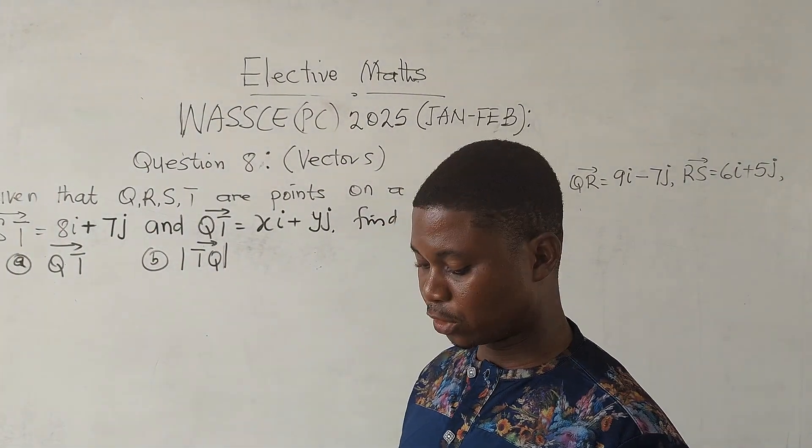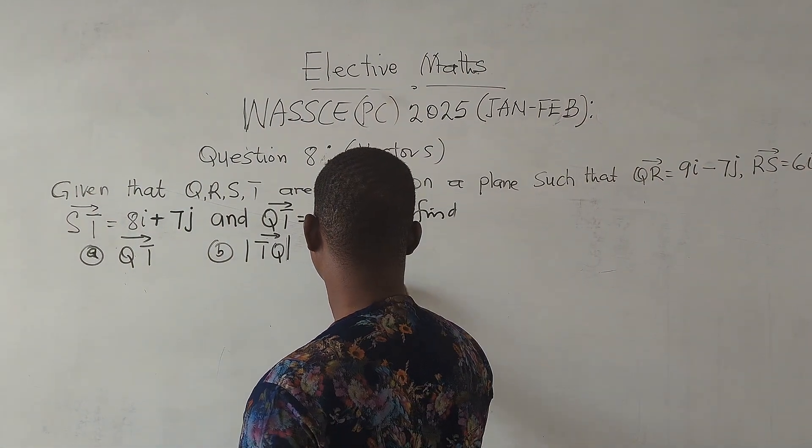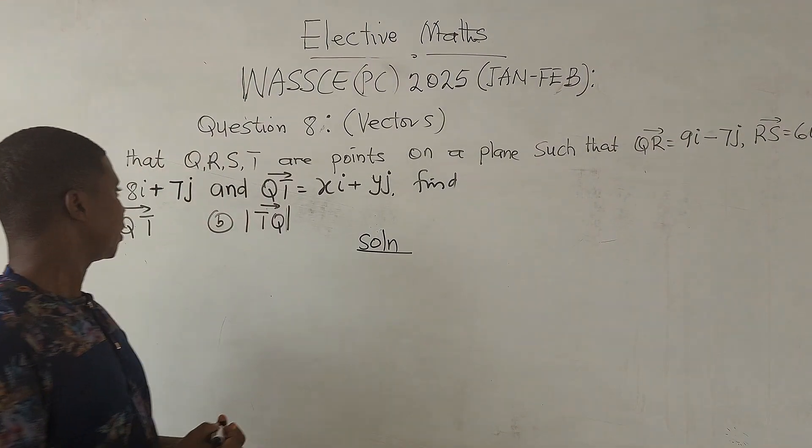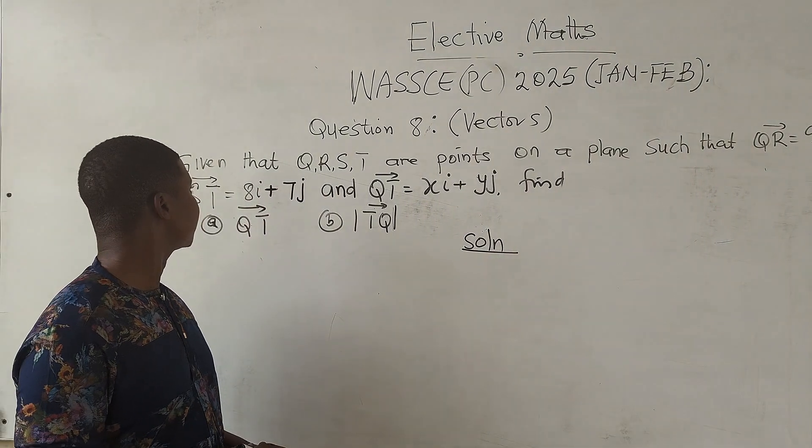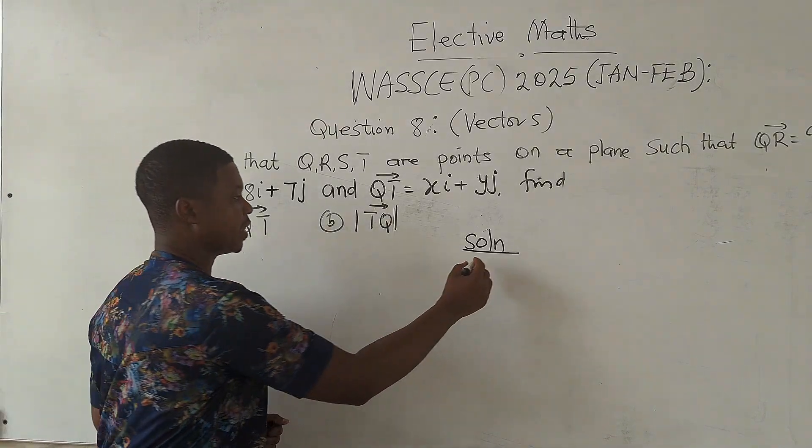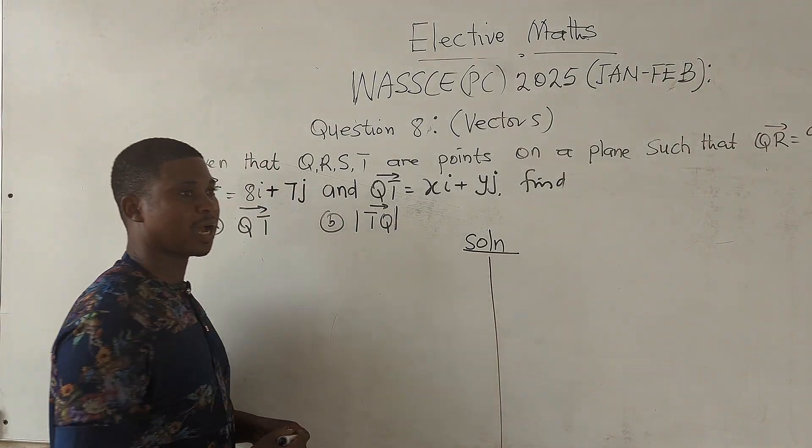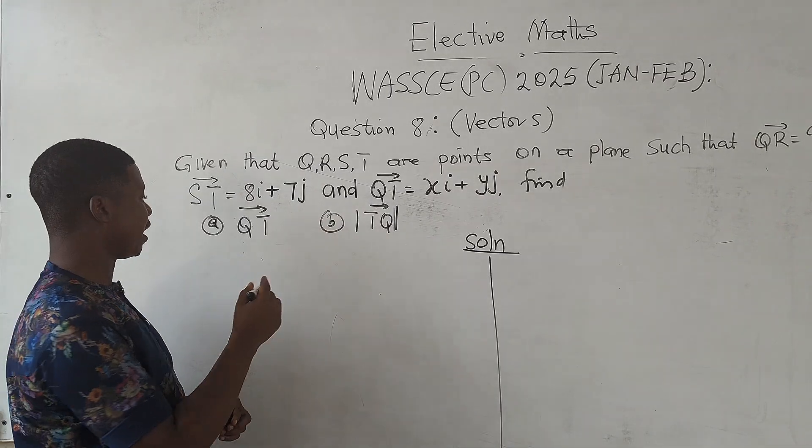Now let's look at the solution to this question. If we look at the first one, we are asked to find vector QT. And according to the vector law of addition, if you look at the order of the alphabet,